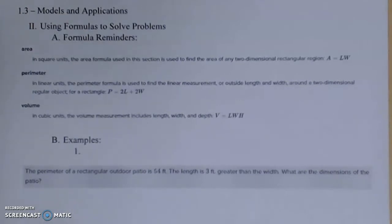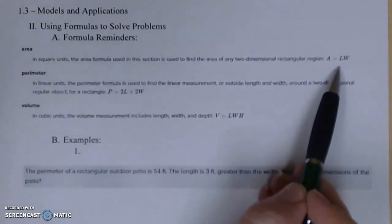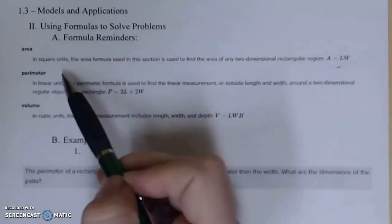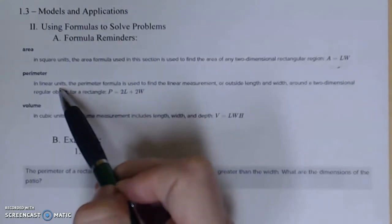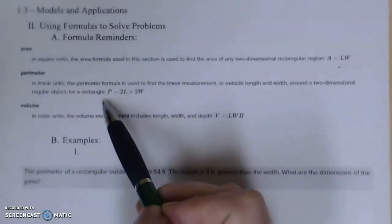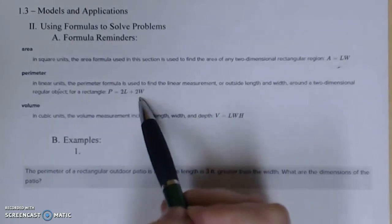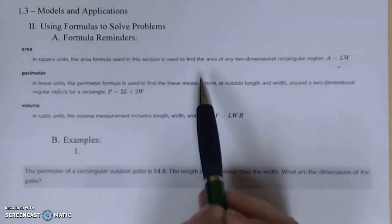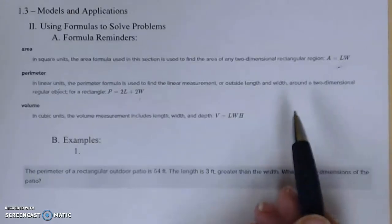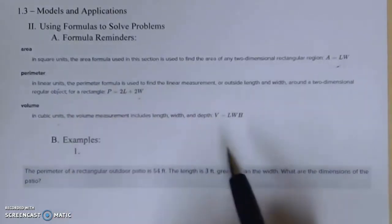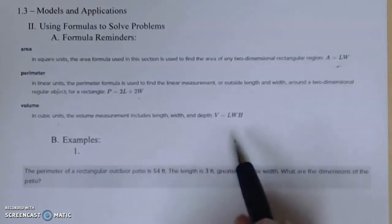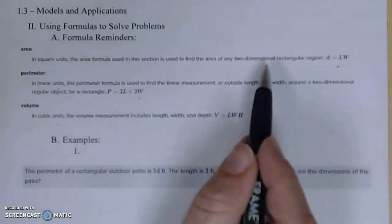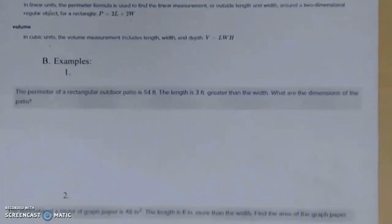So a couple of reminders. Area is normally in square units. The formula section is used to find the area of like maybe a rectangular region. Remember that's length times width. Perimeter is in linear units. The one to find the two-dimensional rectangular region, just a rectangle is twice the length plus twice width. But you're just adding up all the sides. And then volume, remember, is in cubic units. And for, say, a rectangular three-dimensional figure, we're going to do length, width, height. So just kind of some reminders there of things you've done before.